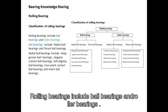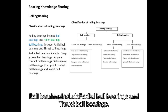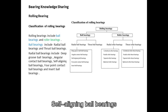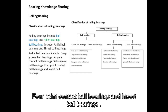Rolling bearings include ball bearings and roller bearings. Ball bearings include radial ball bearings and thrust ball bearings. Radial ball bearings include deep groove ball bearings, angular contact ball bearings, self-aligning ball bearings, four-point contact ball bearings, and insert ball bearings.